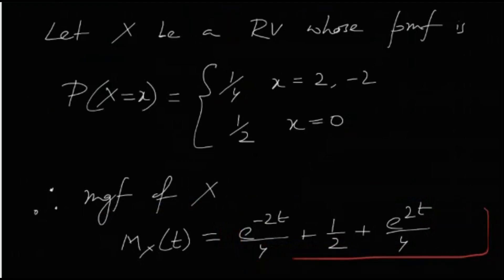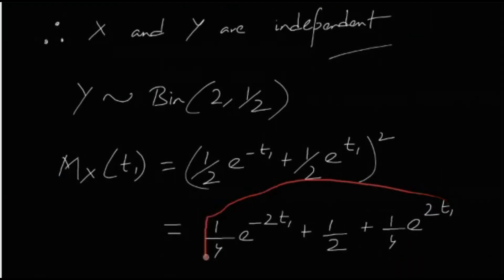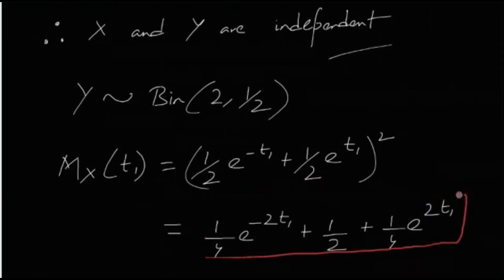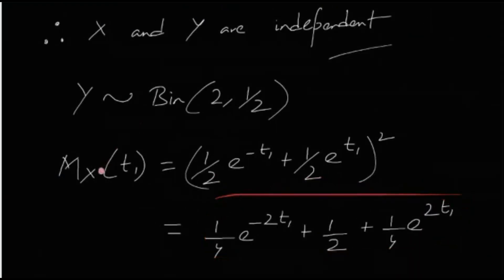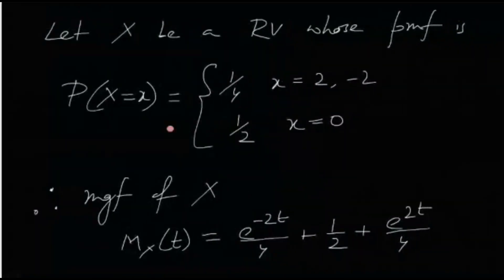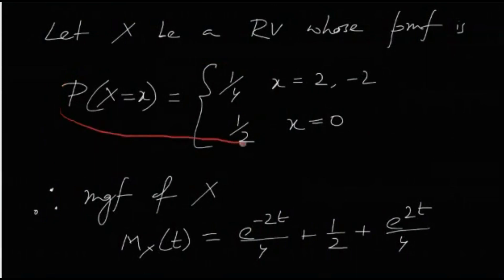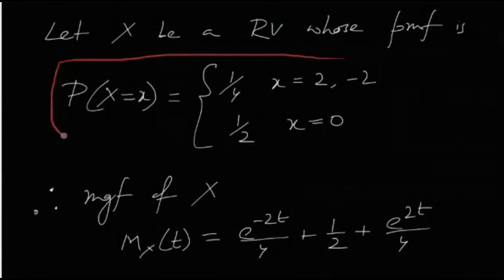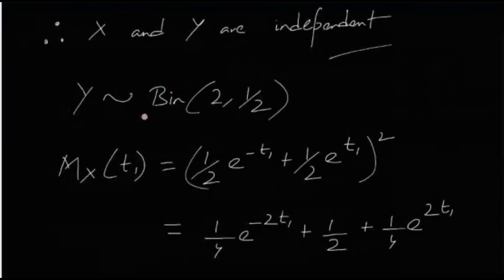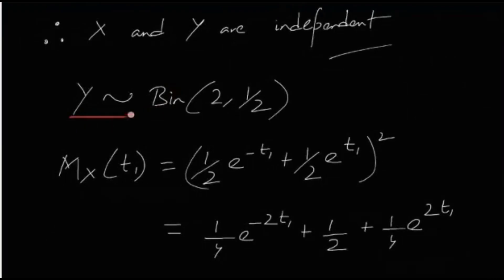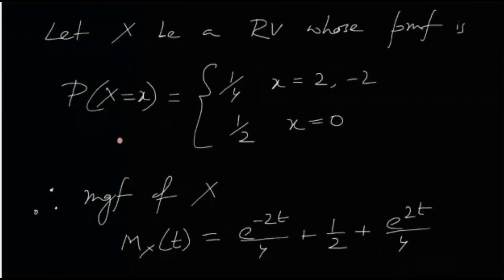This MGF matches the one we had in the problem. That means, by the uniqueness theorem of MGFs, X in the given problem must have this distribution — taking values −2, 0, and 2 with probabilities 1/4, 1/2, and 1/4 respectively. So now we know the distribution of both X and Y.